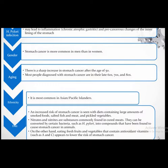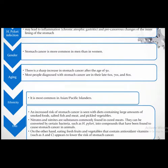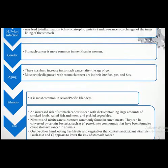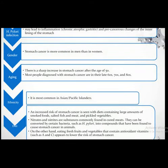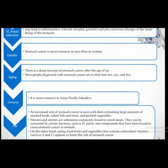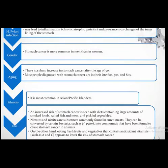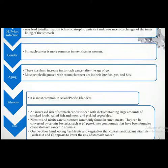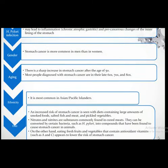Gastric cancer is the second most common cause of cancer worldwide and the tenth most common malignancy in the United States. It is most common in Asian and Pacific Island populations. In Japan, every individual undergoes screening endoscopy, so gastric cancer is more commonly detected early. As a result, early gastric cancer presentation is common in Japan, with very good outcomes and survival after surgical treatment.